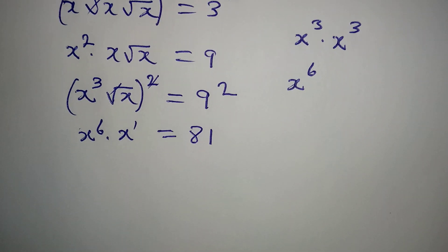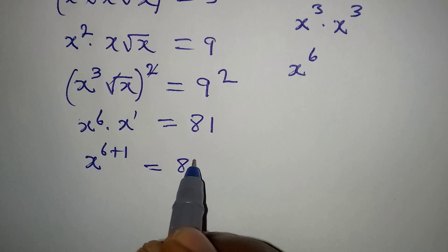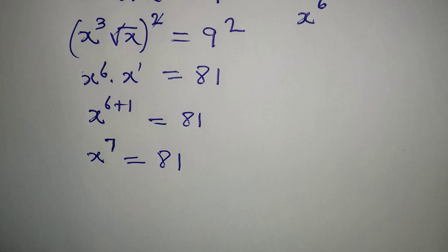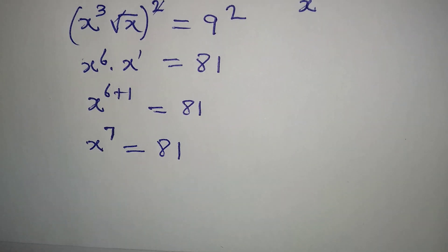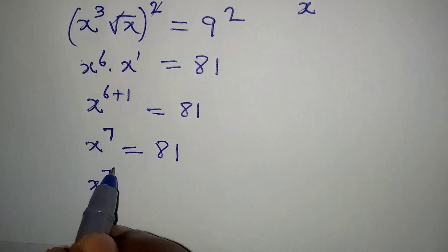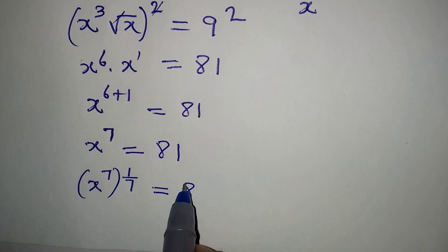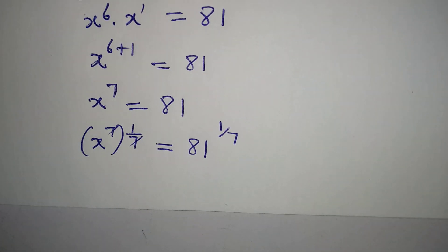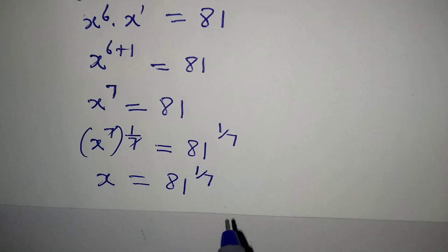Since x is x to the power of 1, we apply the law of indices: x to the power of 6 plus 1 gives x to the power of 7, equal to 81. To remove this power of 7, we multiply the power by its reciprocal, raising both sides to the power of 1 over 7. The 7s cancel, and we conclude that x is equal to 81 to the power of 1 over 7.